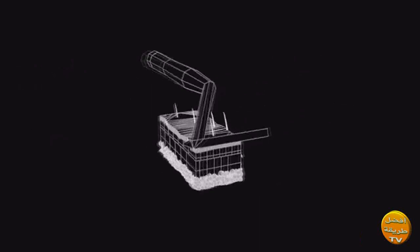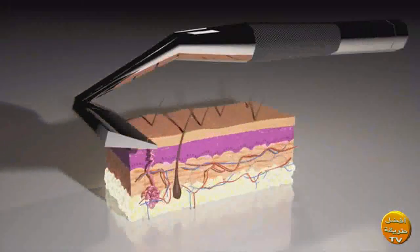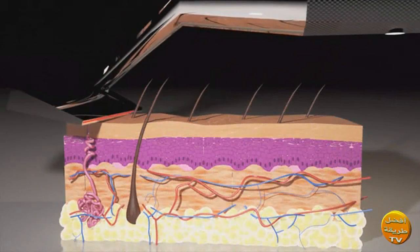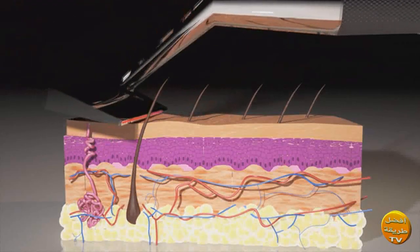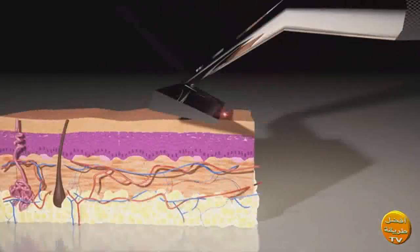A traditional razor cuts the hair shaft at an angle. This is what causes your skin to feel rough. When the SCARP razor makes contact, the laser melts through the hair shaft completely level to the surface of the skin. This leaves a smoother, softer finish that lasts longer to the touch.